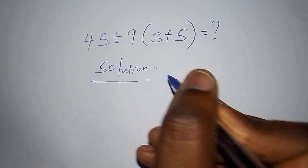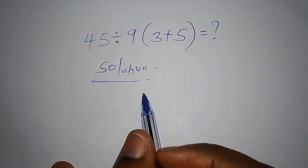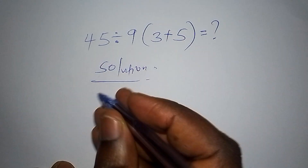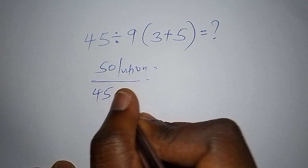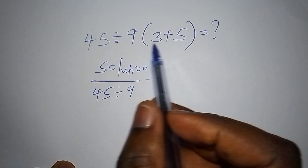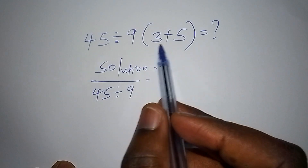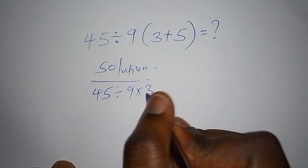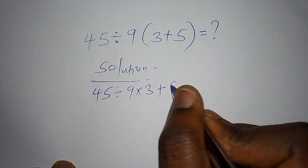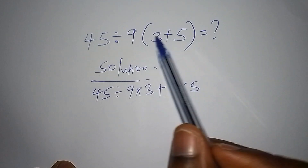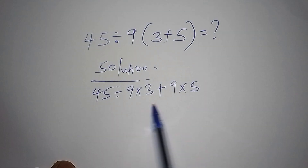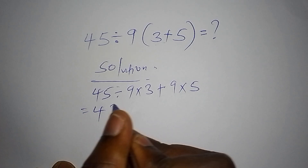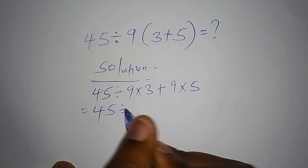Under the solution to the maths problem, don't try to work it out like this: don't say that we have 45 divided by 9, then multiply 9 with the number inside — like 9 multiplied by 3, then also add 9 multiplied by 5. Don't try doing this.